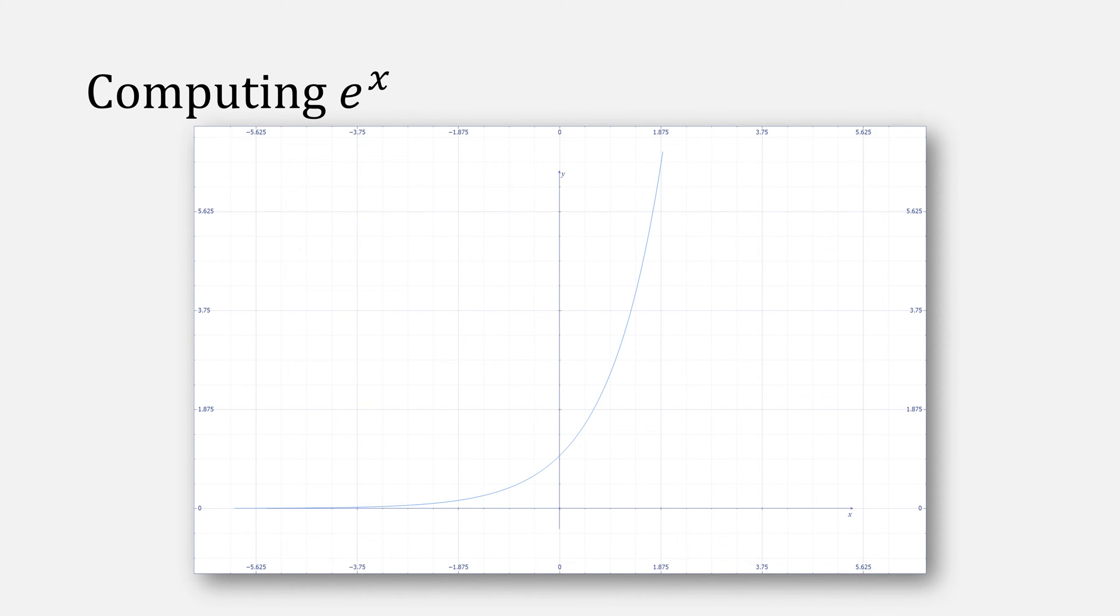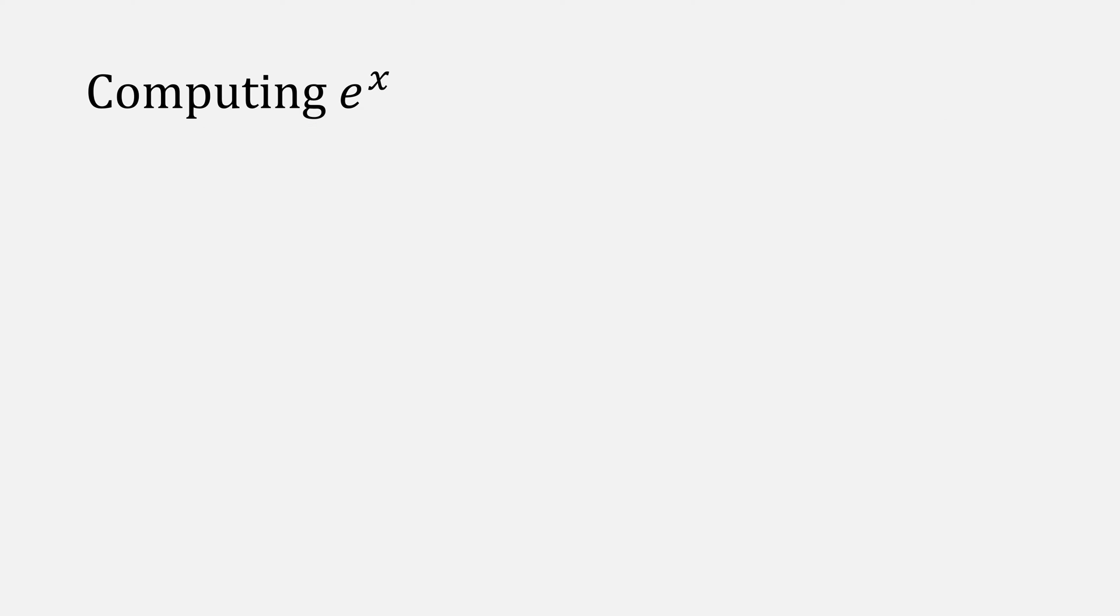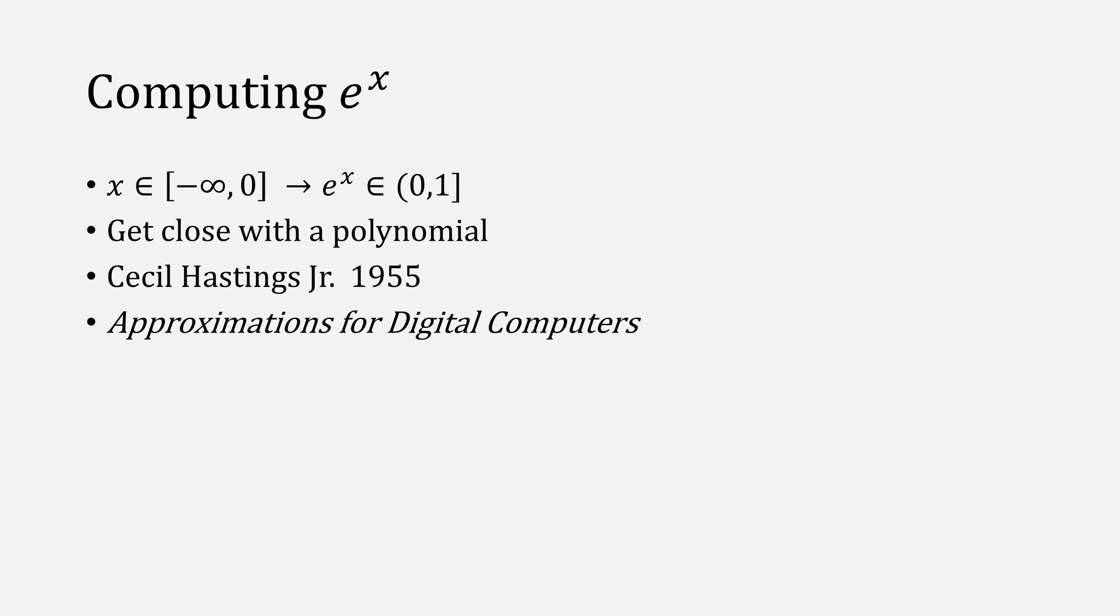If we graph our e to the x function, we can actually divide it into two separate functions. This one on the left is when x is negative, and we can make a very good approximation for this half of the function. That's because for negative numbers, all of our answers are going to be between zero and one. We can approximate this using a very good polynomial. Cecil Hastings Jr. made one in 1955 that worked really well.